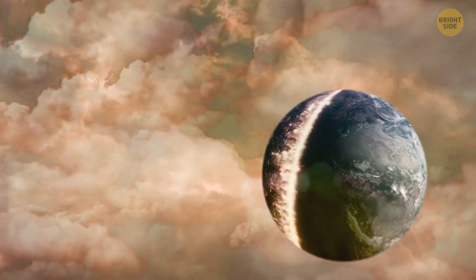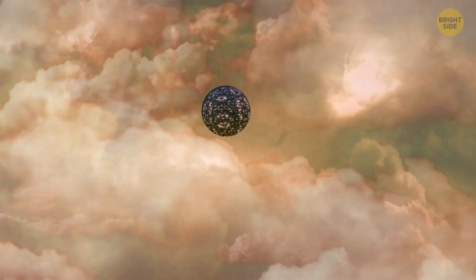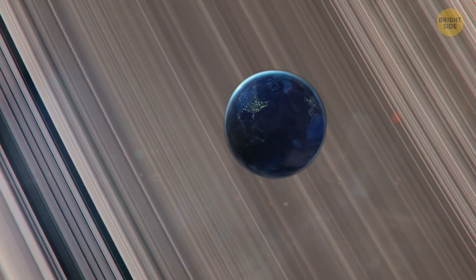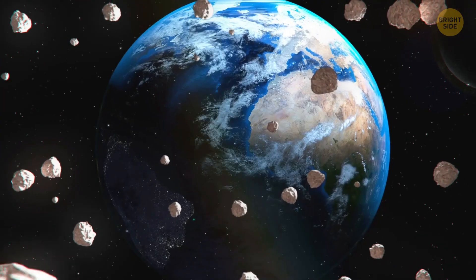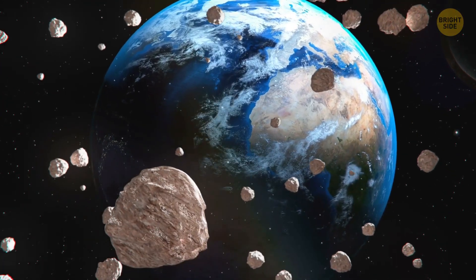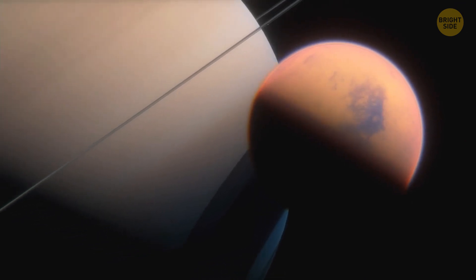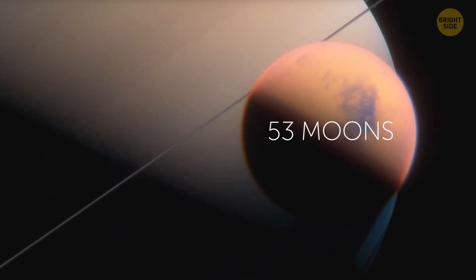But before burning up in Saturn's atmosphere, we'd have to pass through its magnificent rings. They're made up of pieces of comets, asteroids, and shattered moons. It wouldn't be an easy feat to get through this space debris. Plus, our planet would have to avoid Saturn's moons, all 53 of them.